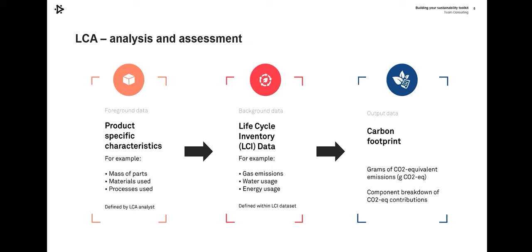It's also thinking about the transport of sub-assemblies and the supply chain that is part of the manufacturing process. All of that information is used alongside a lifecycle inventory database — a data set that allows you to say, for a given part, material, or process, what is the impact? That can be gas emissions, water usage, energy usage, and many other factors. The combination of product-specific data and the lifecycle inventory database allows you to understand the carbon footprint, expressed in grams of CO2 equivalent, giving a single number that allows everything to be compared.